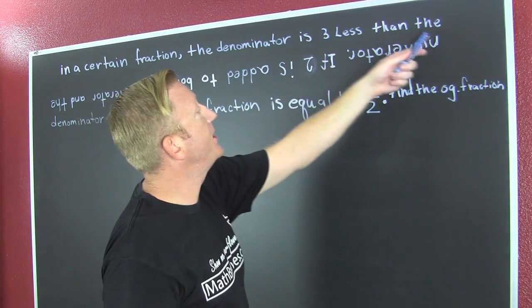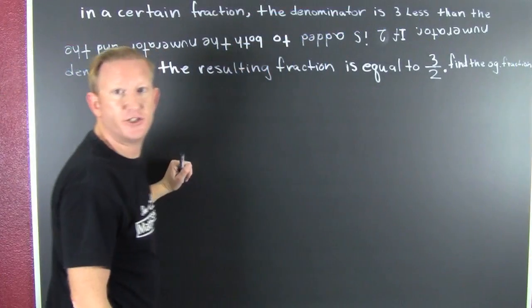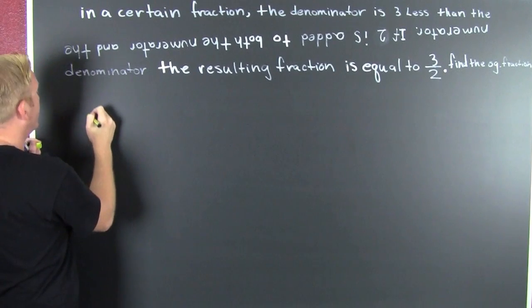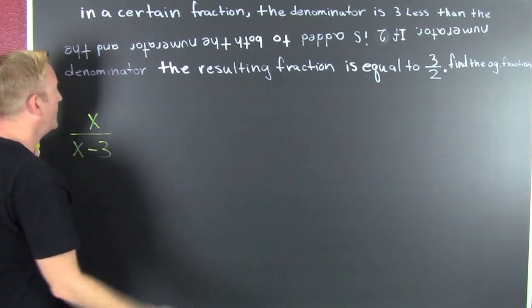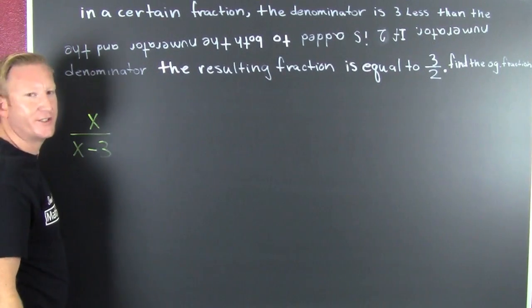We'd read faster if we wrote this way. In a certain fraction, the denominator is three less than the numerator. Let's just write that certain fraction. The denominator is three less than the numerator. Here, that says the denominator is three less than the numerator. We're certain.